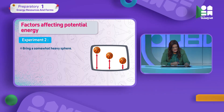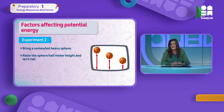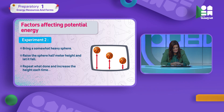Let's bring a somewhat heavy ball. Raise the sphere half a meter height and let it fall. Then repeat and increase the height each time — first half a meter, then one meter, then two meters. Which requires more effort? As height increases, more effort is needed. That effort is the potential energy. As height increases, potential energy also increases.